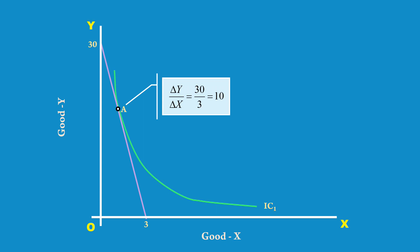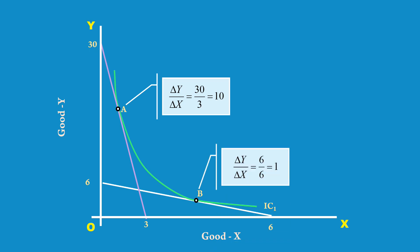The slope is the same as the marginal rate of substitution of X for Y. At this point, the consumer is willing to offer 10 units of good Y in exchange for 1 unit of good X — in other words, the marginal rate of substitution of X for Y is 10. Similarly, we measure the marginal rate of substitution at point B. Draw a tangent to B; the Y intercept of the tangent is 6 and its X intercept is also 6. Delta Y by delta X is 6 by 6, which equals 1. So the slope is 1 and the marginal rate of substitution is 1.